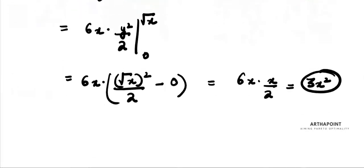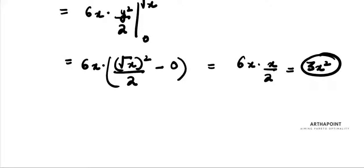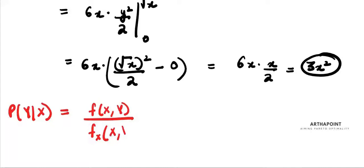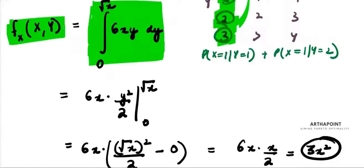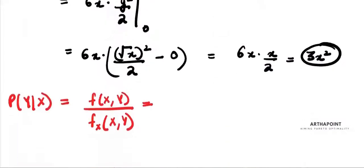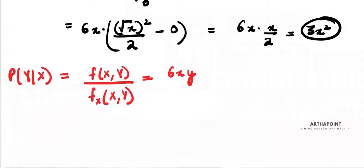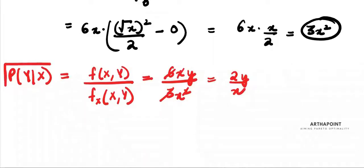Now going back to the conditional PDF: f(y|x) = f(x,y) / f_X(x). The joint density is 6xy, and the marginal is 3x². Dividing gives 2y/x. So 2y/x is the conditional PDF of Y given X.